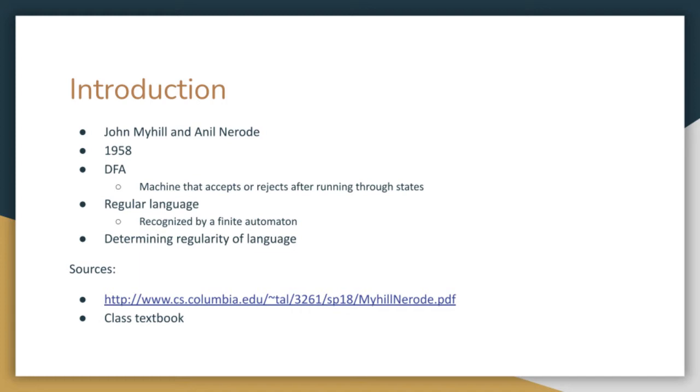Some important terms to know are DFA and regular language. As a reminder, a DFA is, at its core, a machine that accepts or rejects after running through a sequence of states. A regular language is one that is recognized by some finite automaton.